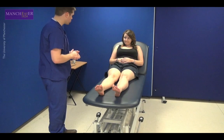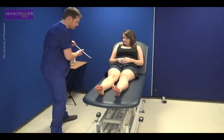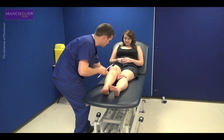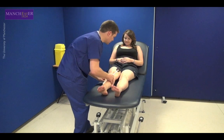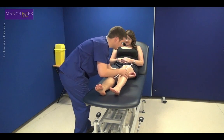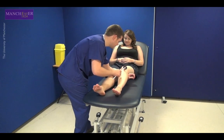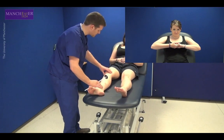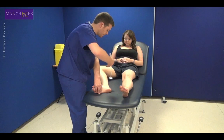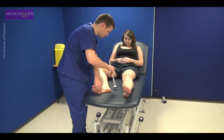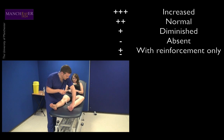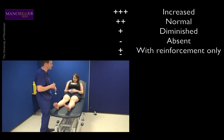To test the reflexes, make sure the patient is as relaxed as possible. Flex your wrist and use the weight of the hammer to determine the strength of the blow. Make sure you strike the tendon, not the muscle, and compare one side to the other. If the reflex appears absent, use the manoeuvre of interlocking fingers and pulling against each other immediately before striking the tendon to reinforce the limb reflexes. Record reflexes as increased or hyperactive, normal, diminished, absent, or only present with reinforcement.